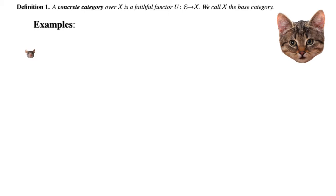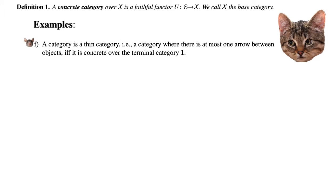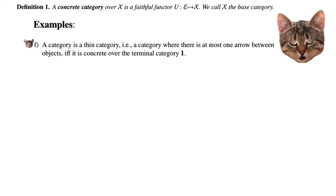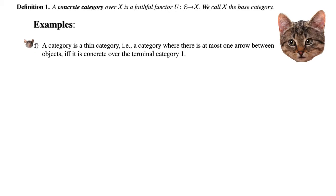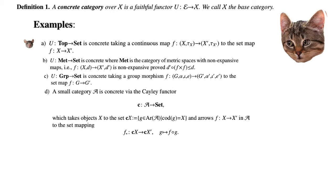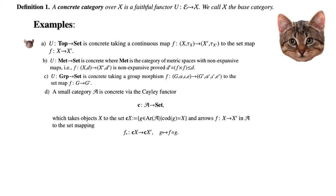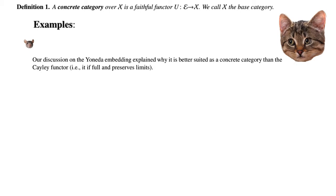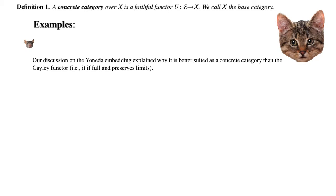We see from example F that concrete categories are not necessarily injective on objects, since all objects are just mapped to the terminal category which has one object. Examples A, B, C, and D also show that concrete categories are often not full. When they are full, they are called embeddings. Our discussion on the Yoneda embedding explains why it is better suited as a concrete category than the Cayley functor, so we won't actually use the Cayley functor much in subsequent talks.